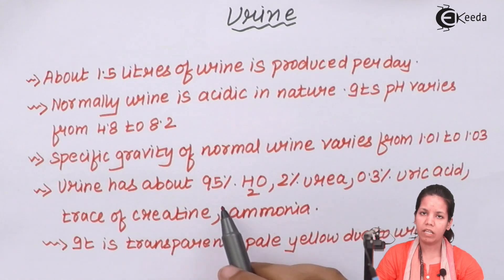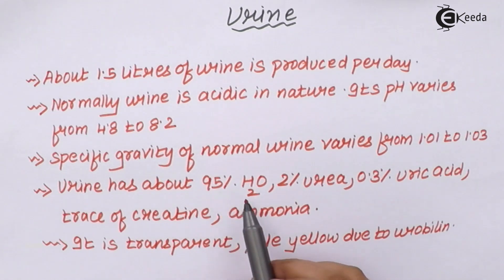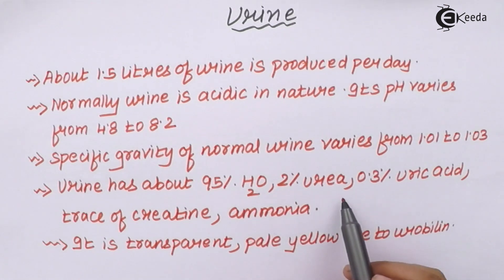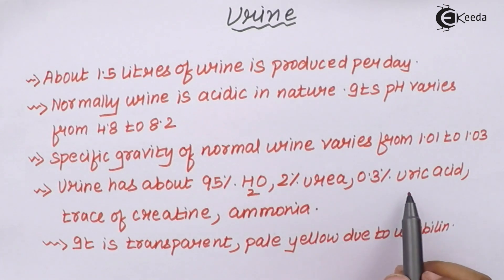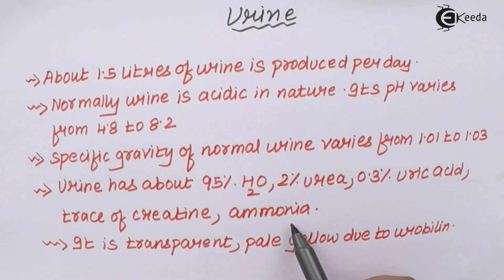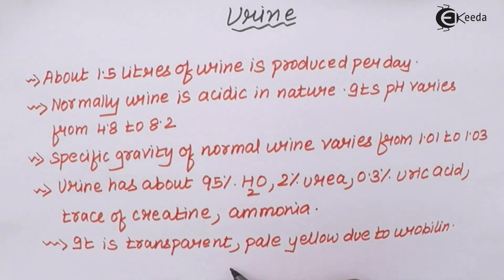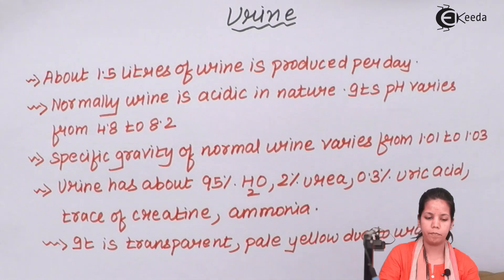Urine has various components. The major components are 95% water, 2% urea, 0.3% uric acid, some amount of creatinine, and some amount of ammonia (NH3). Urine is basically a transparent pale yellow colored liquid due to the pigment called urobilin.